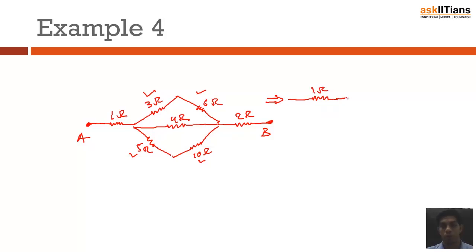So I can draw an equivalent circuit diagram which kind of looks like this. So this is 1 ohm, this is 1 ohm, this is 9 ohm, this is 4 ohm, and this is 15 ohm.